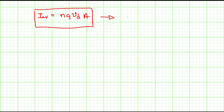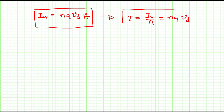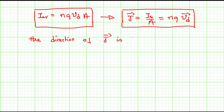This means the current density J equals I_average over A, which equals n·q·v_d. The direction of J is the same as v_d, which is the same as the direction of conventional current in the circuit. Importantly, this direction is opposite to the actual flow of electrons.